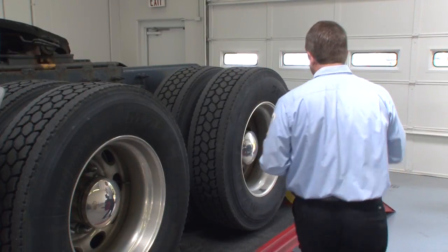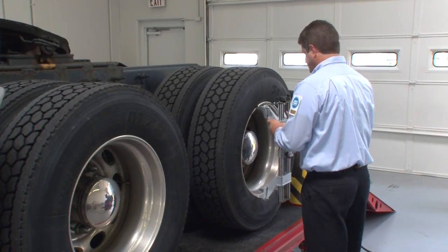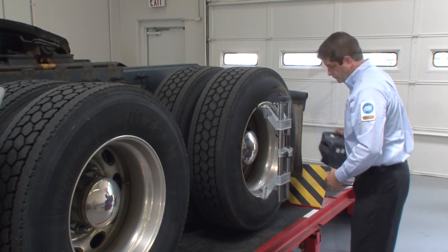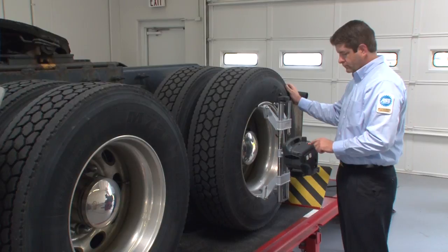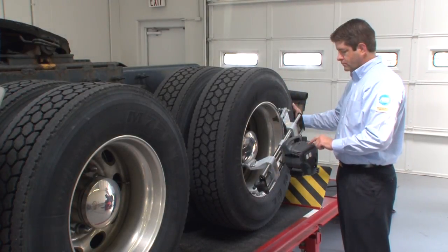Then the rear sensors are installed on the rear drive axle and compensated. Hunter's wireless technology makes handling the sensors fast and easy.